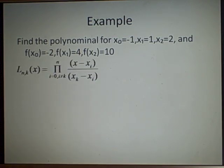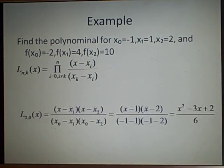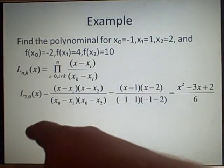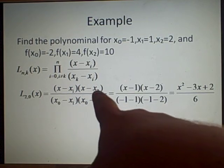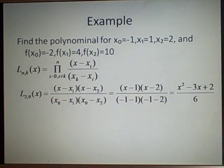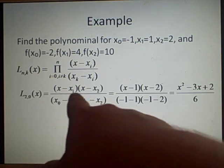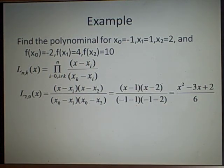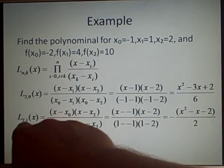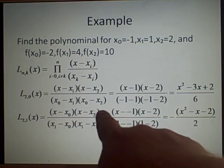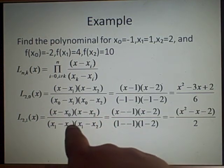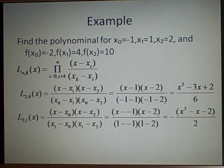Our n is two because we have indices zero, one, two. Starting with k=0, we take x minus x1 times x minus x2 — everything except where i equals k — so x0 doesn't appear in the denominator terms. This gives a polynomial once multiplied out. Then for k=1, we use everything except index one, so we have x0 and x2, which multiplies out accordingly.